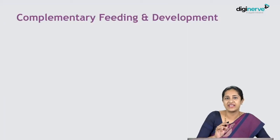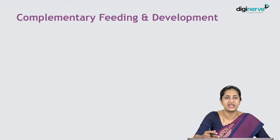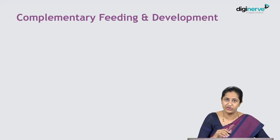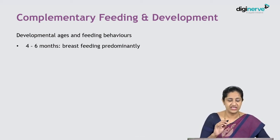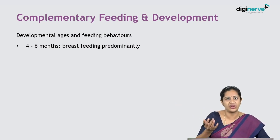This is a critical and sensitive period. Now we will discuss the bridge between complementary feeding and normal development — how we introduce complementary feeding relates to developmental milestones and myelination of the brain. At 4 to 6 months of age, the baby is predominantly breastfed, with the suck-swallow-breathe cycle, and is fed in an almost semi-reclined position during breastfeeding.